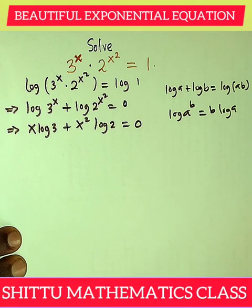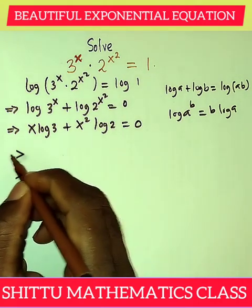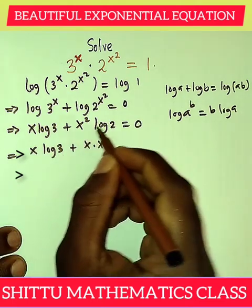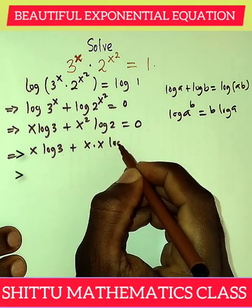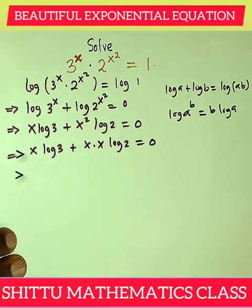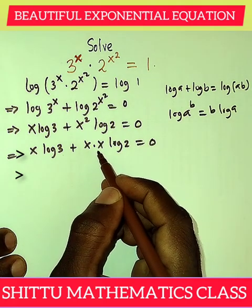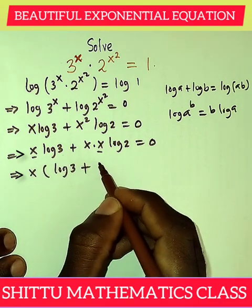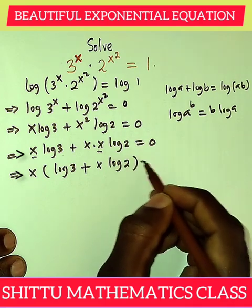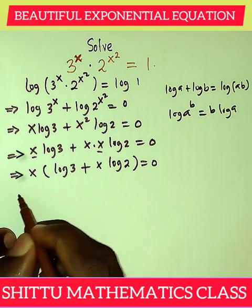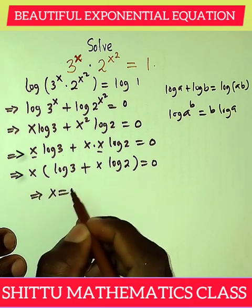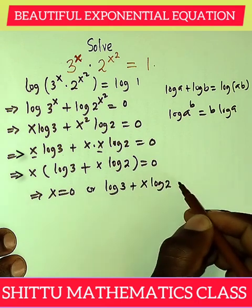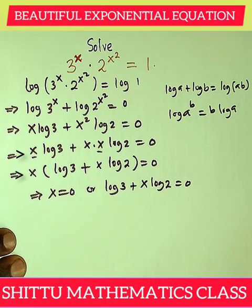From here we have x log 3 plus x squared log 2 equals zero. We can see that x appears in both terms, so we factorize it out: x times (log 3 plus x log 2) equals zero. From here we can say x equals zero, or log 3 plus x log 2 equals zero.